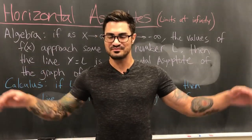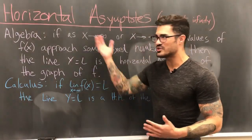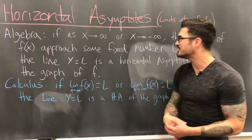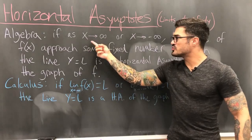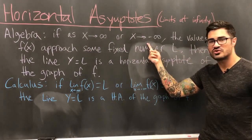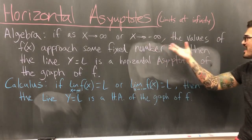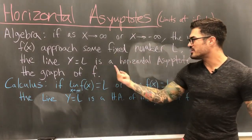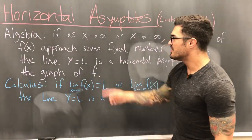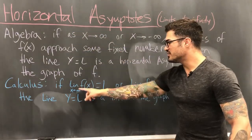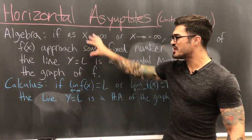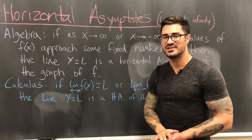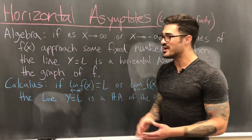Here's the definition for horizontal asymptote from algebra: if as x gets really large in the positive or negative direction — toward infinity or negative infinity — the values of f(x) approach some fixed number L, then the line y = L is a horizontal asymptote of the graph of f. This is literally the definition of the limit of a function as x goes to infinity — these two definitions are the exact same thing.